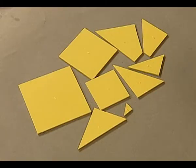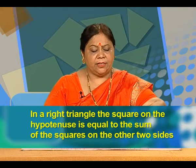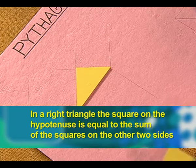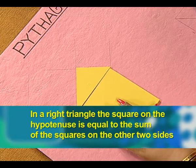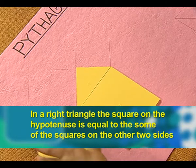We have some colorful cutouts here. Let us verify the Pythagoras theorem, which states that in a right triangle, the square on the hypotenuse is equal to the sum of the squares on the other two sides.